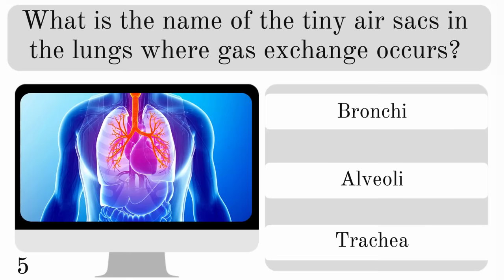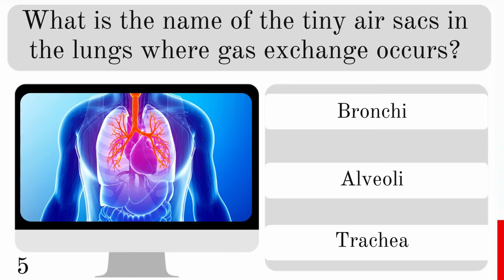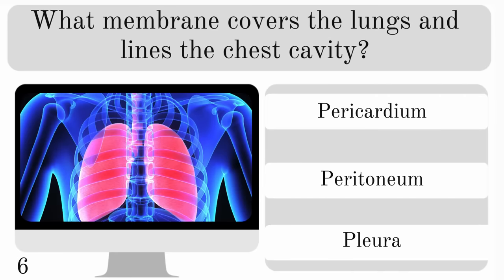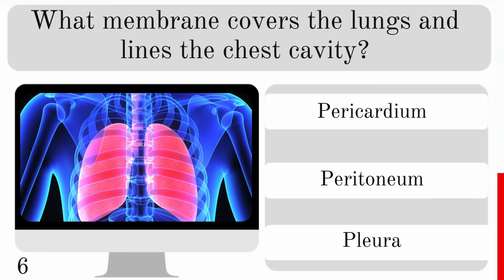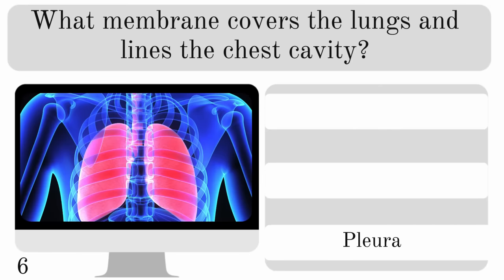What is the name of the tiny air sacs in the lungs where gas exchange occurs? Are they bronchi, alveoli or trachea? They're called alveoli. So what membrane covers the lungs and lines the chest cavity? Is it the pericardium, peritoneum or pleura? The answer is the pleura.